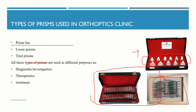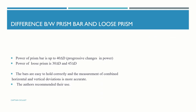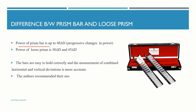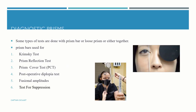These prisms are used for different purposes: diagnostic, investigation, therapeutics, and treatment. Regarding the difference between prism bars and loose prisms: the prism bar has a power of up to 40 diopters with progressive changes in power, while the power of loose prisms is 30 D and 45 D. The bars are simple to grip appropriately, and measurements of horizontal and vertical variances are more precise.